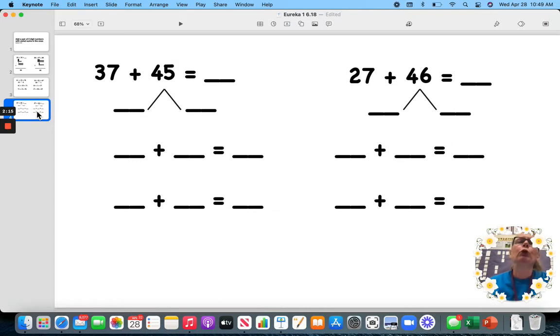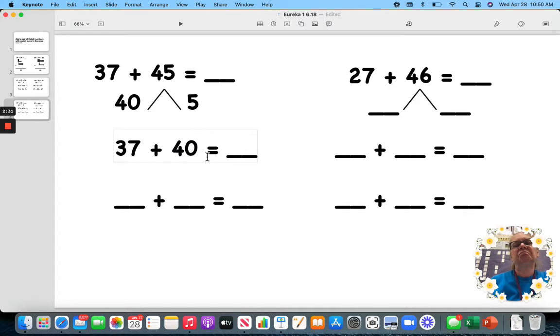Let's try two more problems. This is 40 and 5. So, let's do 37 plus, let's do 40. We could have picked 5, but I picked 40.